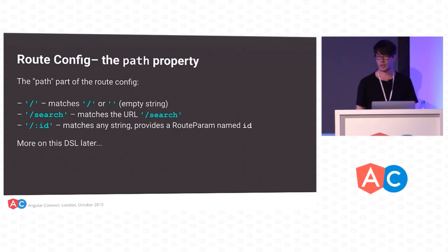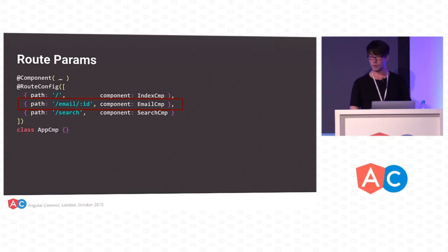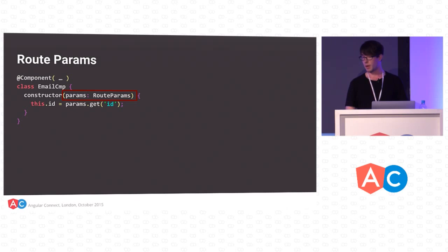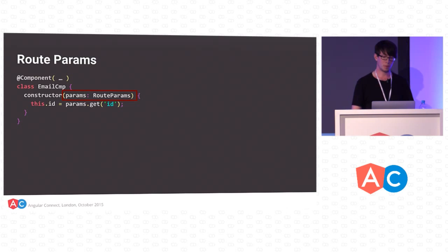You also have things like slash colon ID, which represents a route parameter. In our example, we have this email component. It has an ID and that refers to a specific email in our app. The way you can get hold of this is by injecting the RouteParam service. It's just like any other service you'd inject into Angular 2, and it acts as a mutable map of param names to their string values parsed out of the URL.